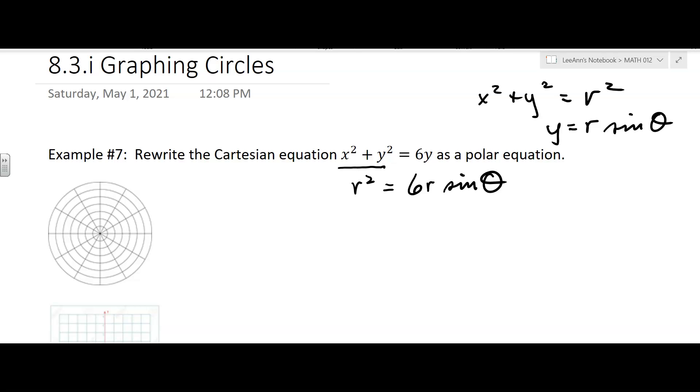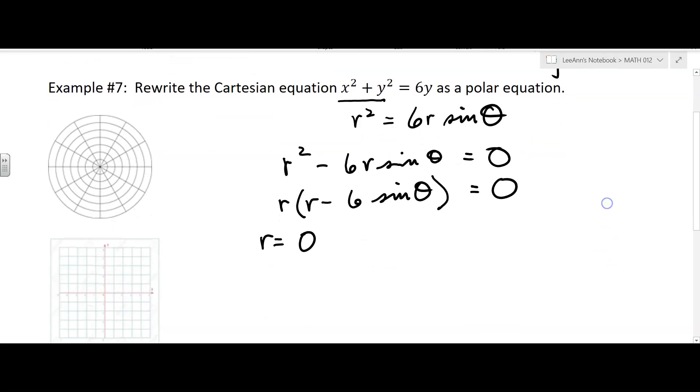So now if we take that, it's quadratic, so we can say r squared minus 6r sine theta equals 0. Factor out the r, so you get r equals 0. Well, r equals 0, that's not a very exciting graph. It's just one point, it would be the origin.